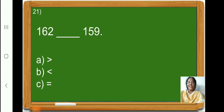Here, we have 3 options: greater than, smaller than, and equal to. Children, you all know that 162 is greater than 159. So, let us put a tick on option A, greater than.